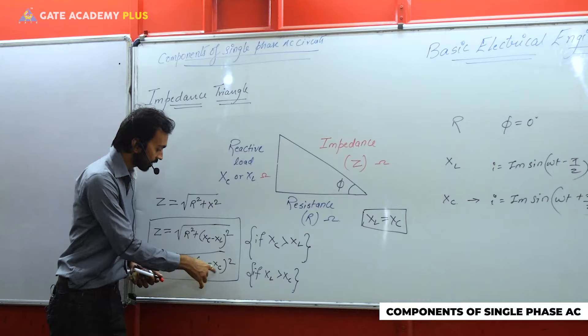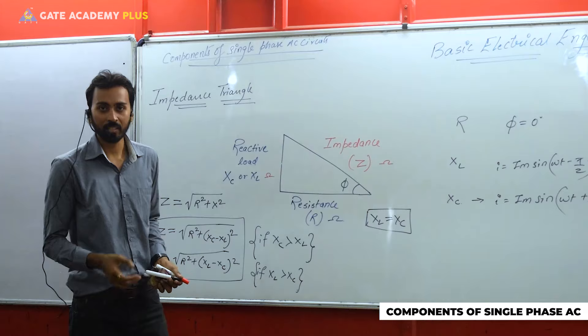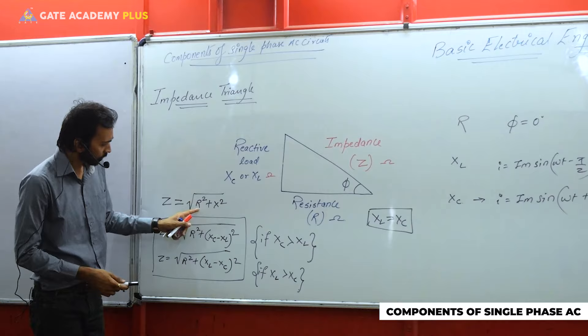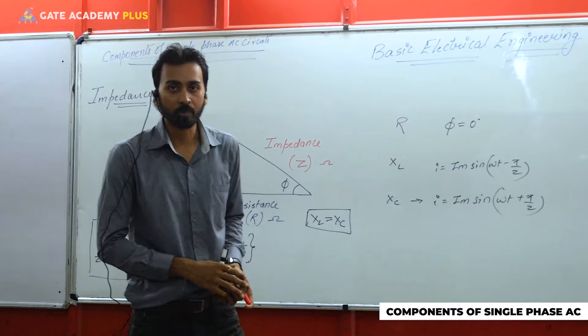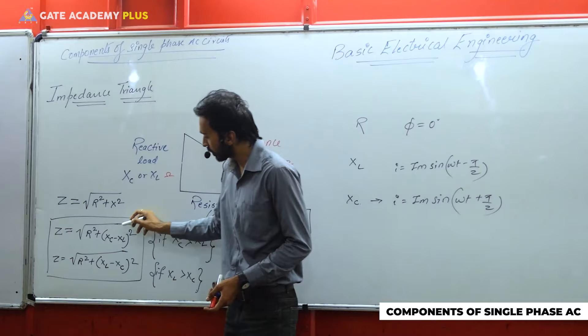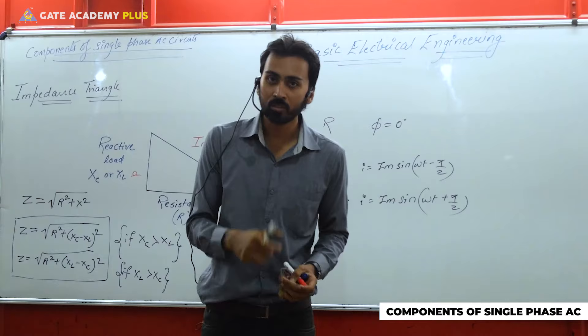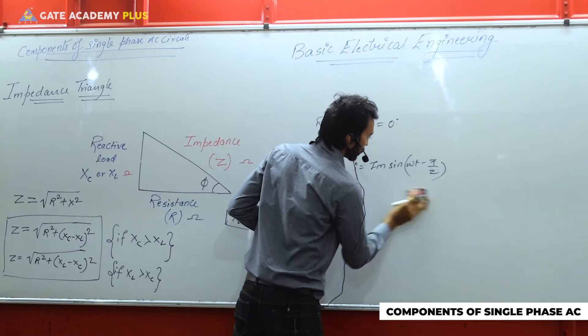If the circuit has RL only (no capacitor), you don't need those special identities — you can directly use Z = √(R² + Xl²). Similarly, if your AC circuit has only RC, then Z = √(R² + Xc²). In conditions where you have both XL and XC with a greater/lower relationship, you calculate Z using the two formulas mentioned. Apart from these, the impedance triangle also gives us two more values related to phi.